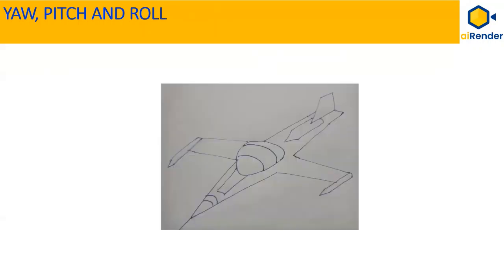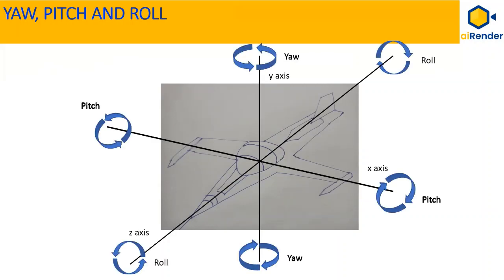There are three parameters that define a camera's viewing direction. Imagine a fighter plane. Consider the X, Y, and Z axis of the plane as shown in the figure.